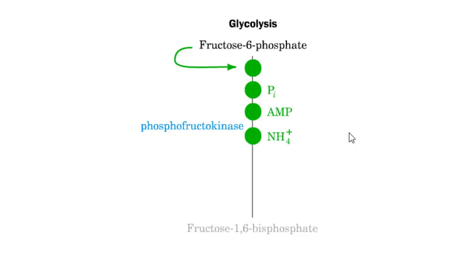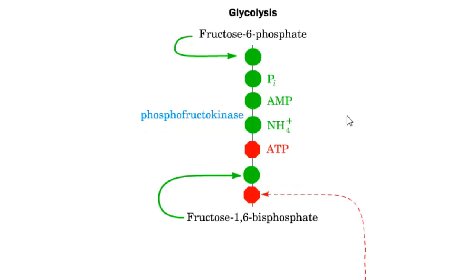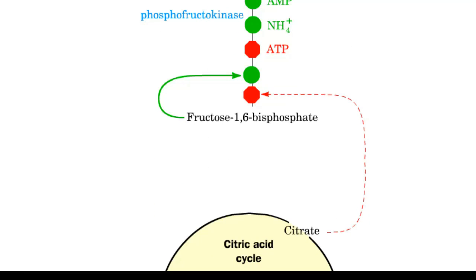The most highly regulated enzyme in glycolysis is phosphofructokinase, which catalyzes the phosphorylation of fructose-6-phosphate into fructose-1,6-bisphosphate. This enzyme is activated by its substrate fructose-6-phosphate (auto-activation), as well as by inorganic phosphate, AMP, and ammonium ions. It is inactivated by energy molecules — ATP — and also inhibited by citrate and fructose-1,6-bisphosphate.